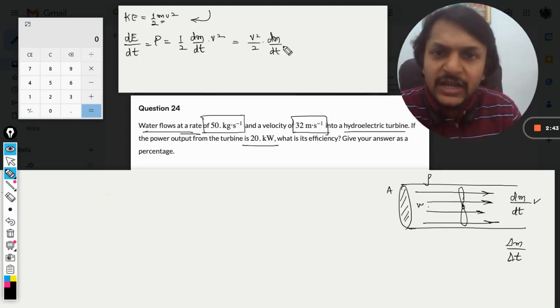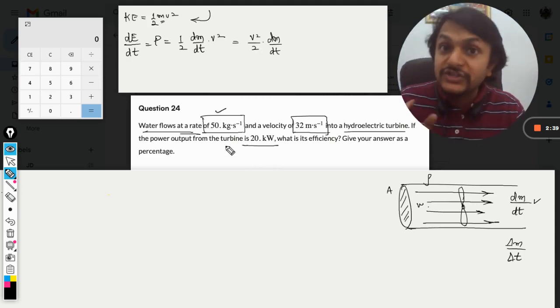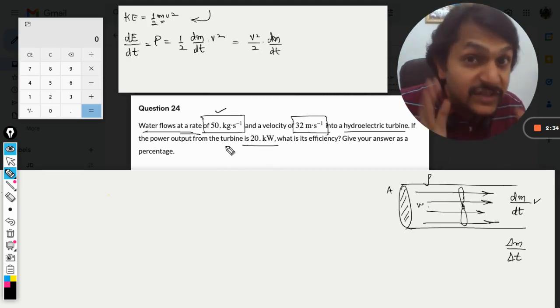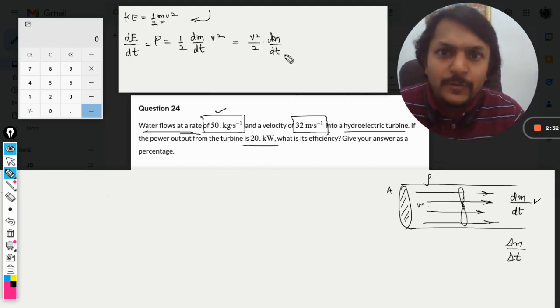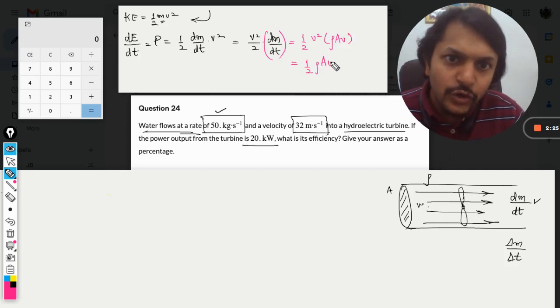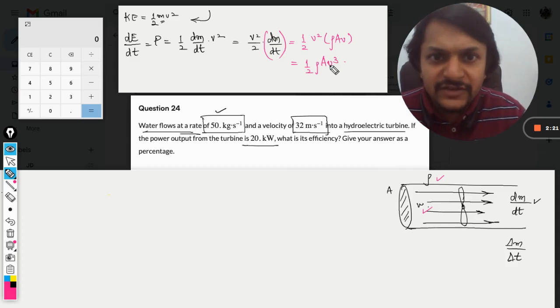As per our question, the rate of flow of water is already given, so we can move forward. But there is another formula I want to give you: dm/dt equals rho A v. So power becomes half rho A v cubed, where rho is the density of the fluid and v is the velocity.